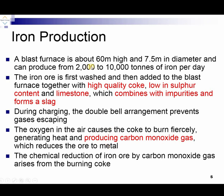A blast furnace is 60 meters high and 7.5 meters in diameter, and it has the capacity to produce 2,000 to 10,000 tons of iron per day — a very high quantity. The iron ore is first washed and then added to the blast furnace, together with high-quality coke low in sulfur content and limestone, which combines with the impurities and forms a slag.